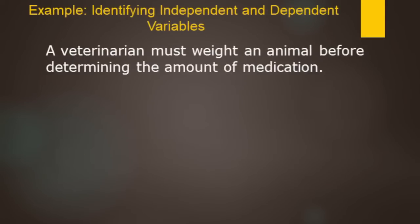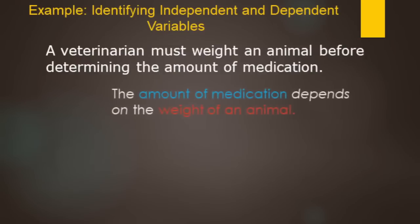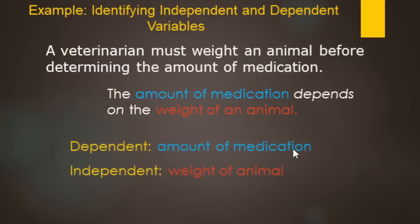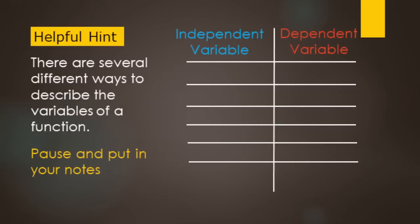A veterinarian must weigh an animal before determining the amount of medication to give. How much medication depends on how big the animal is — its weight in pounds. So the dependent variable is the amount of medication, and the independent variable is the weight of the animal. The amount of medication depends on, or is a function of, the weight of the animal.